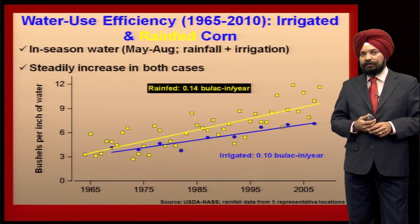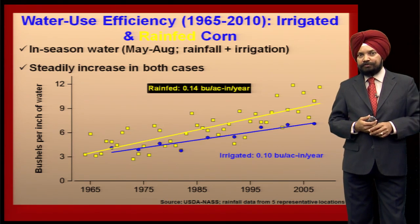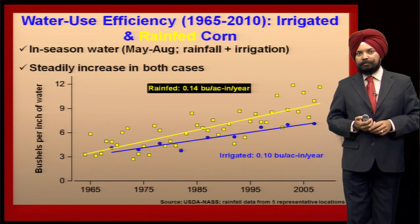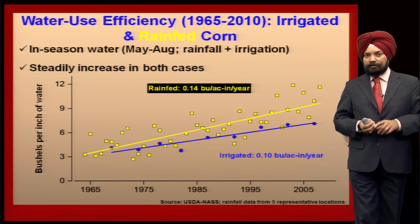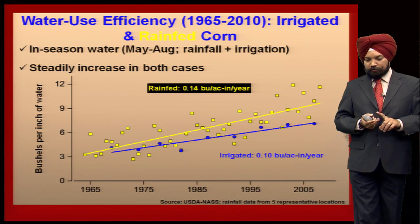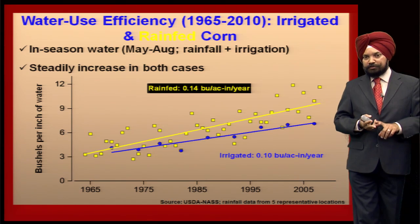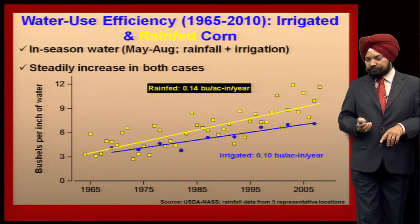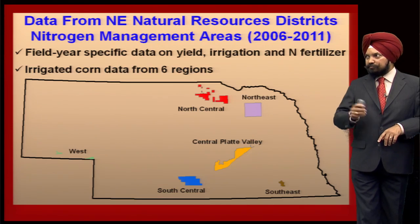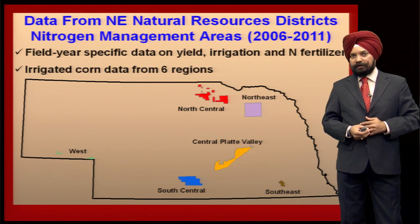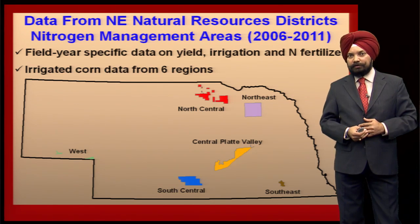The increase in water and nitrogen use efficiency over time and higher yields have been possible because of better crop management practices, better new hybrid crop rotations, conservation tillage, earlier planting dates, and many more factors. We were so far discussing trends at the state level from the national data set.